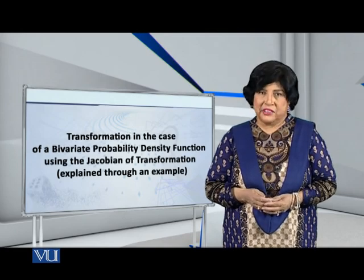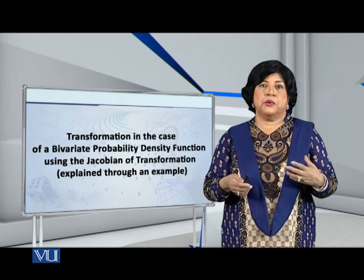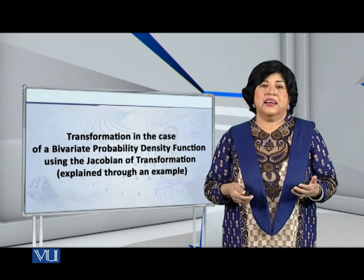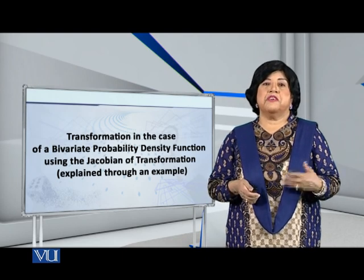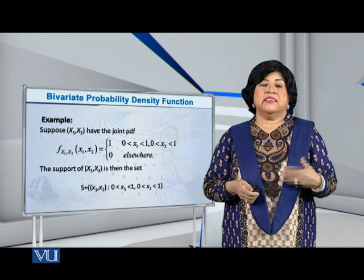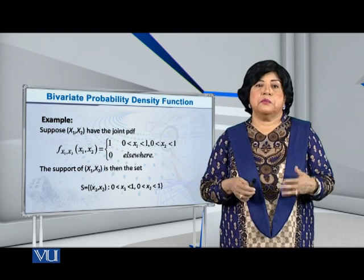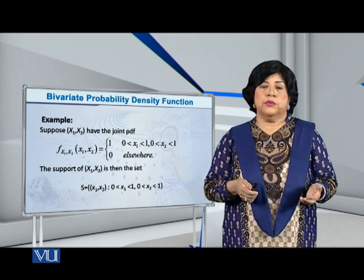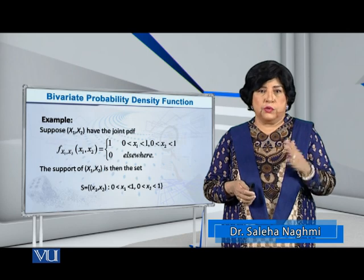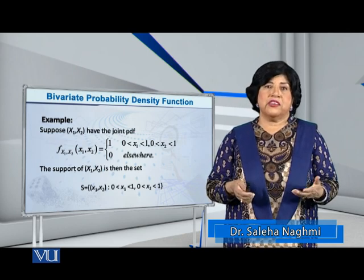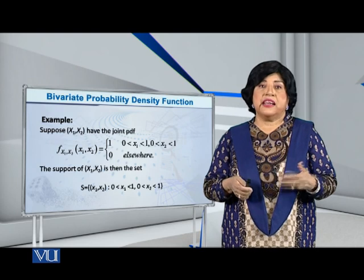Dear students, I would like to present to you the concept of transformation in the case of a bivariate probability density function using the Jacobian of transformation technique, and I would like to do it with the help of an example. Suppose that the random vector (x1, x2) has the PDF f(x1, x2) = 1 where x1 lies between 0 and 1 and x2 also lies between 0 and 1, and the PDF is equal to 0 elsewhere.